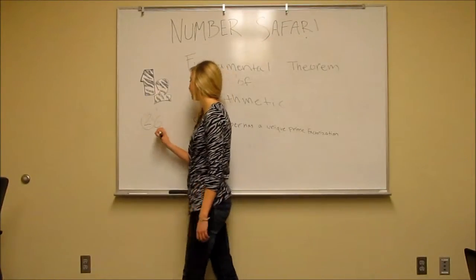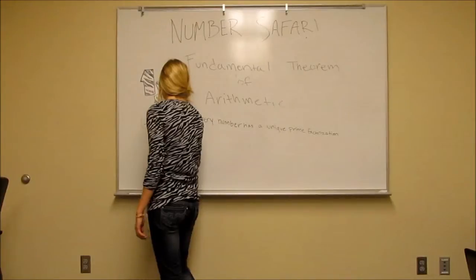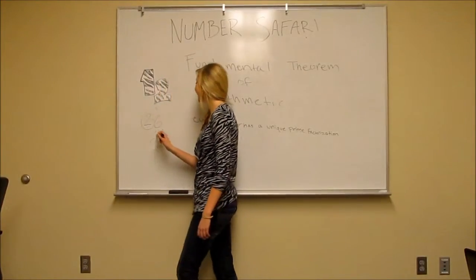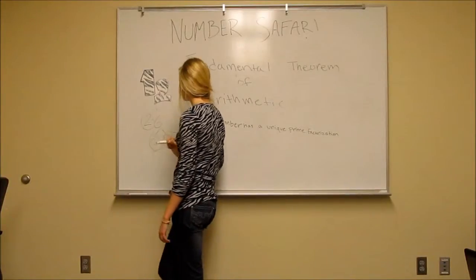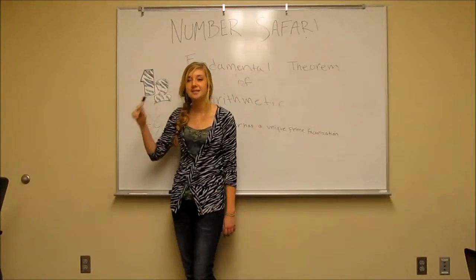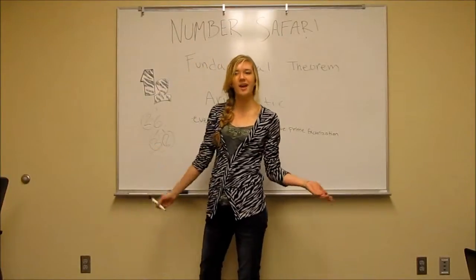And 6 is divided by 3 and 2. Are 3 and 2 prime numbers? Yeah, yes they are! So our prime factorization is going to be 2, 3 and 2. So another way of saying that is 2 squared times 3.